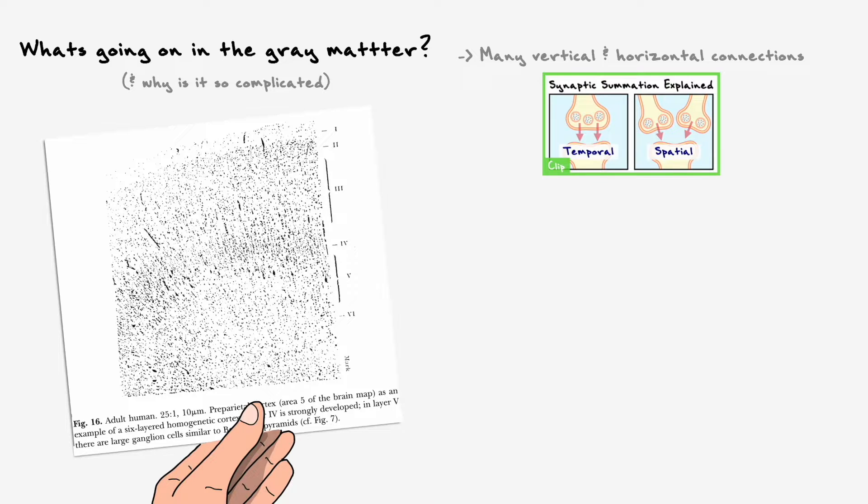Of course, the connections between the neurons are not done randomly and there is a structure and a logic, but with the trillions of synapses that there are, the circuit rapidly gets messy, especially that it has to be studied on the micron scale.